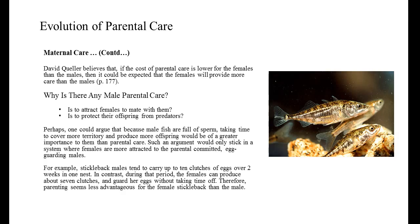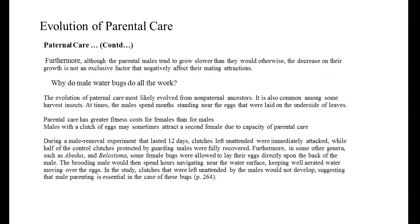Perhaps one could argue that because male fish are full of sperm, taking time to cover more territory and produce more offspring would be of greater importance to them than parental care. Such an argument would only hold in a system where females are more attracted to parentally committed, egg-guarding males. For example, stickleback males tend to carry up to 10 clutches of eggs over two weeks in one nest. In contrast, during that period, the females can produce about seven clutches and guard their eggs without taking time off. Therefore, parenting seems less advantageous for the female stickleback than the male. Furthermore, although parental males tend to grow slower, the decrease in their growth is not an exclusive factor that negatively affects their mating attraction.